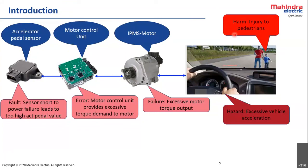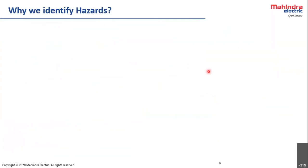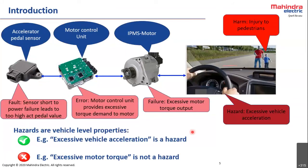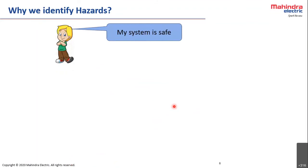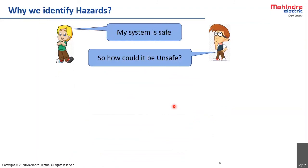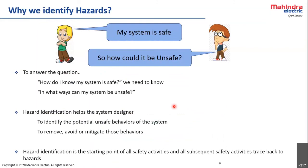We need to clearly identify hazards because the excessive vehicle acceleration is the hazard, whereas excessive motor torque is just a failure — not a hazard. When analyzing hazards on a system, you should not write things like 'unintended ABS function' or 'unintended AEB function' — those are not hazards. The hazard should always be defined at the vehicle level. As a supplier, the OEM will ask how your system can be unsafe, and hazard analysis is how we answer that.